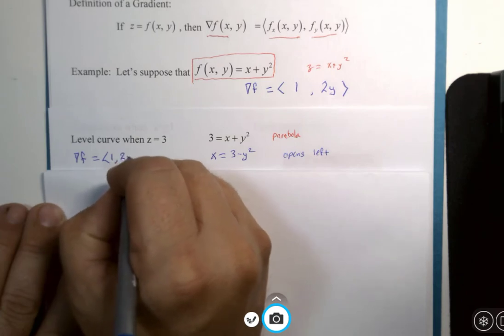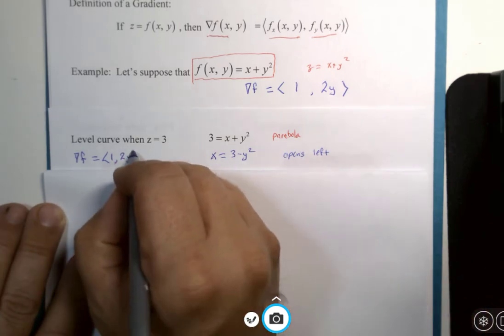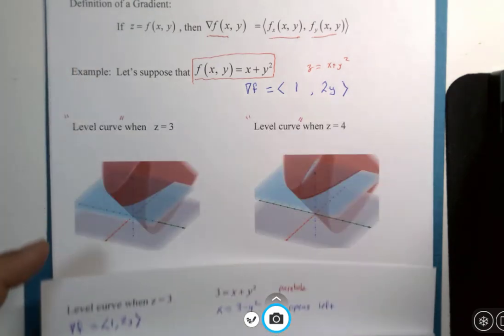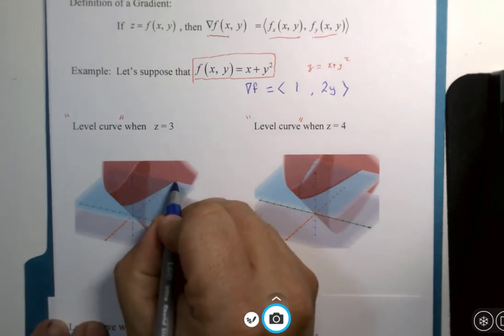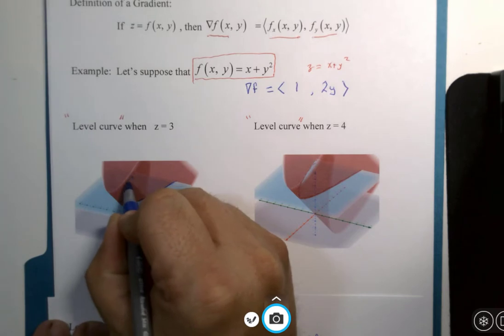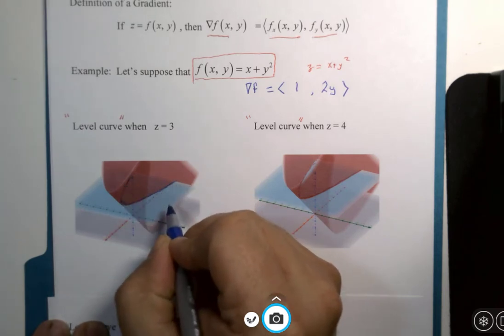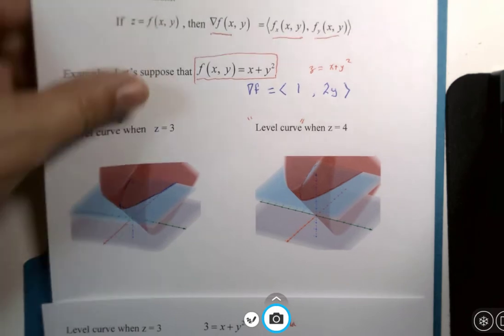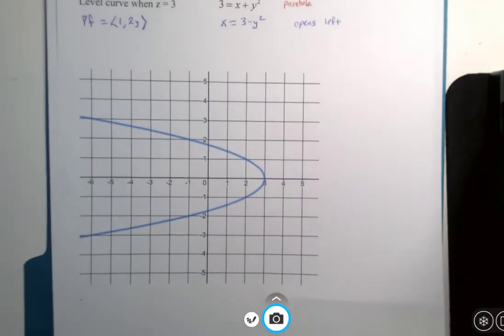1, 2y was my gradient. I'm going to need that for what happens here. So what I'm going to do is show you the parabola we would get if we were three units above the ground, the intersection of that plane and that surface.